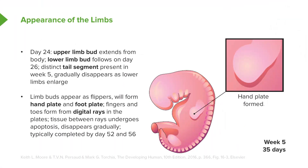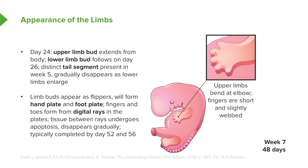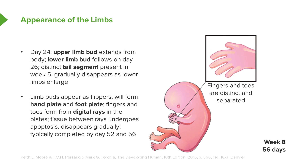As the upper and lower limbs extend, they start to form a hand plate, and that hand plate and the corresponding foot plate on the lower limb have little digital rays of tissue that become more solid inside the flipper-like hand plate. The webbed tissue between those digital rays starts to thin and eventually undergo apoptosis and die off. By about day 52 or 56, those digital rays are very distinct and we have actual fingers and toes — day 52 for the upper limb and day 56 for the lower limb.